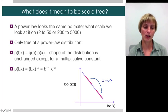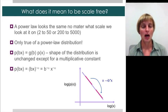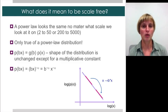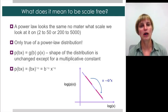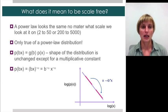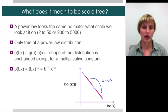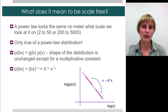We often hear power law networks referred to as being scale-free. What this means is that the power law looks the same no matter what scale we look at — whether it's in the range of two to fifty or two hundred to five thousand. This is only true of a power law distribution, because if you change x by some multiplicative constant, that probability is just going to have another constant in front.